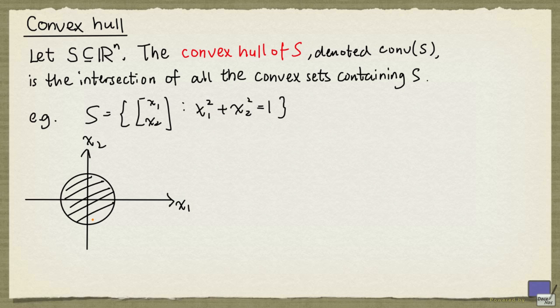That means any convex set must contain the unit disk. But the unit disk itself is a convex set that contains S. So the convex hull of S cannot be anything smaller than this unit disk. And so the convex hull of S is the unit disk.